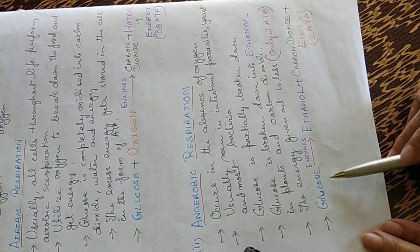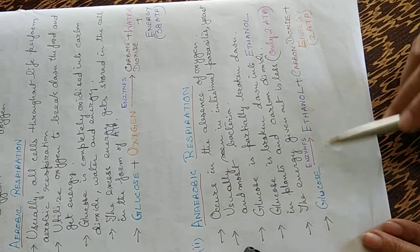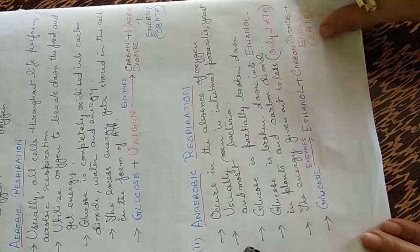Here glucose, as there is no oxygen, so oxygen is eliminated. Glucose in presence of enzyme is broken down to ethanol, carbon dioxide and two ATP molecules of energy.